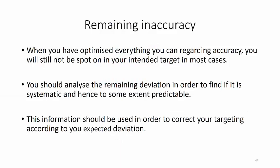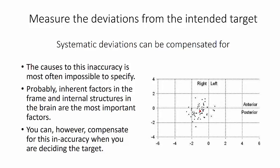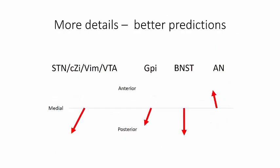However, when you have optimized everything you can regarding accuracy, you will still not be spot on in your intended target in most cases. But you can analyze the remaining deviation in order to find if it is systematic, and hence to some extent predictable. And this information should be used in order to correct your targeting according to expected deviation. We measure the deviation from the intended target, and systematic deviations can be compensated for. The causes to this inaccuracy is most often impossible to specify, but you can compensate for this inaccuracy when you are deciding on the target. The more details you gather, the better predictions you will be able to make.